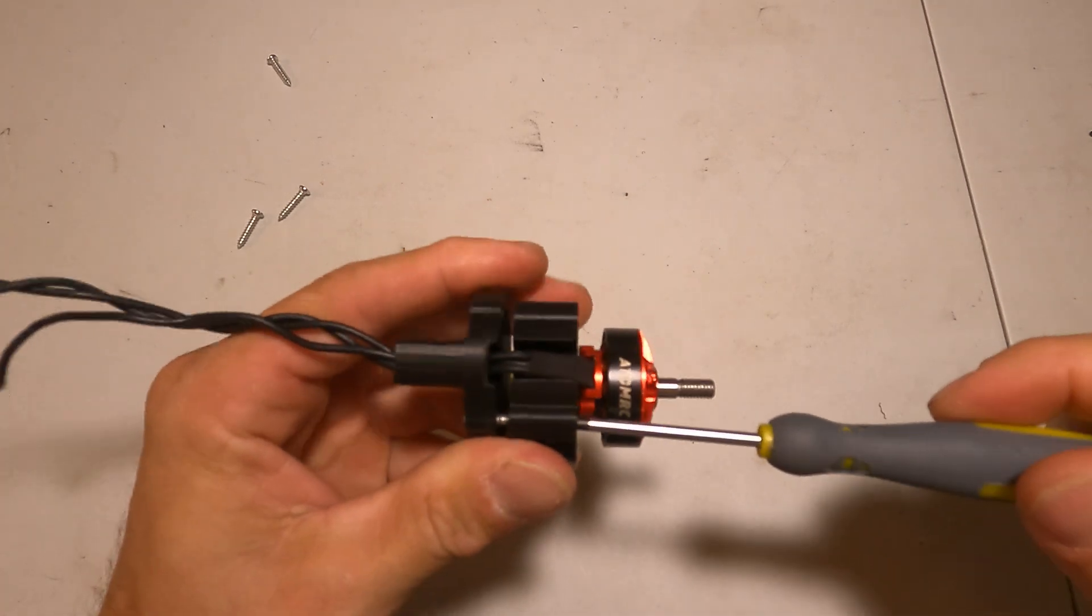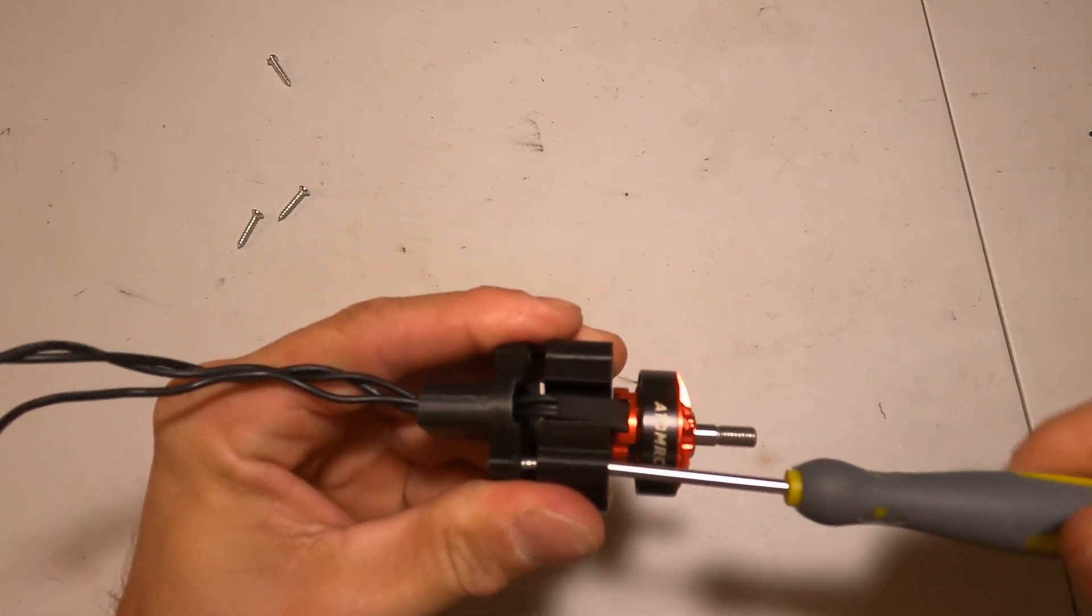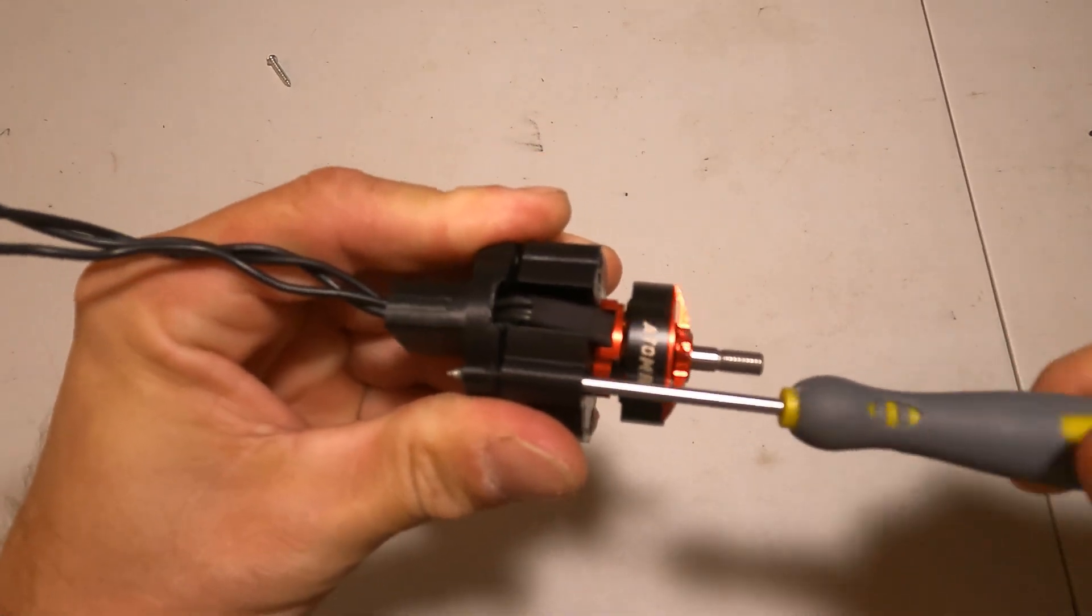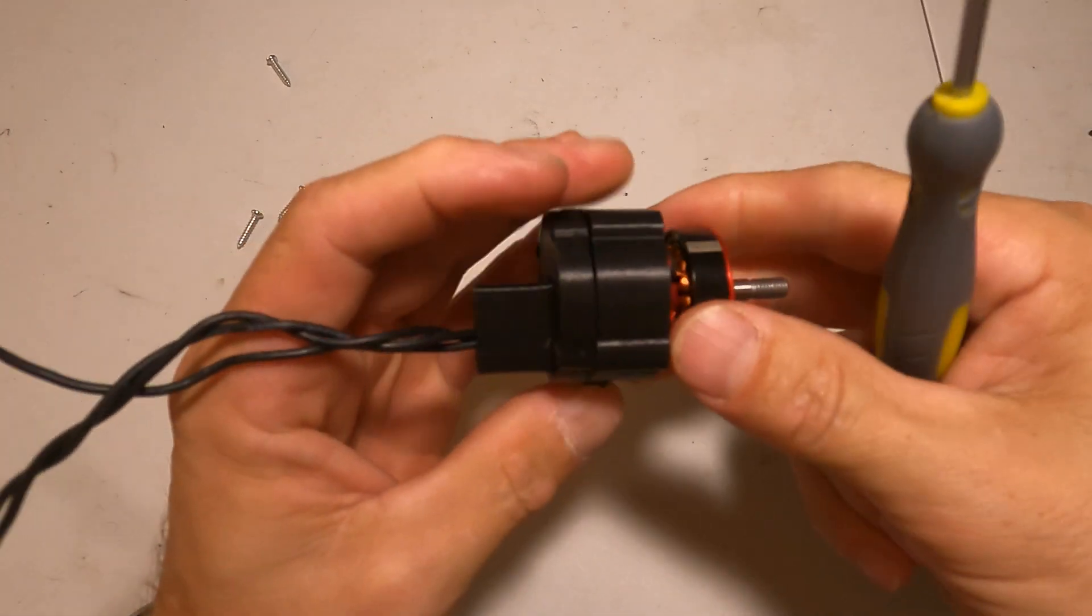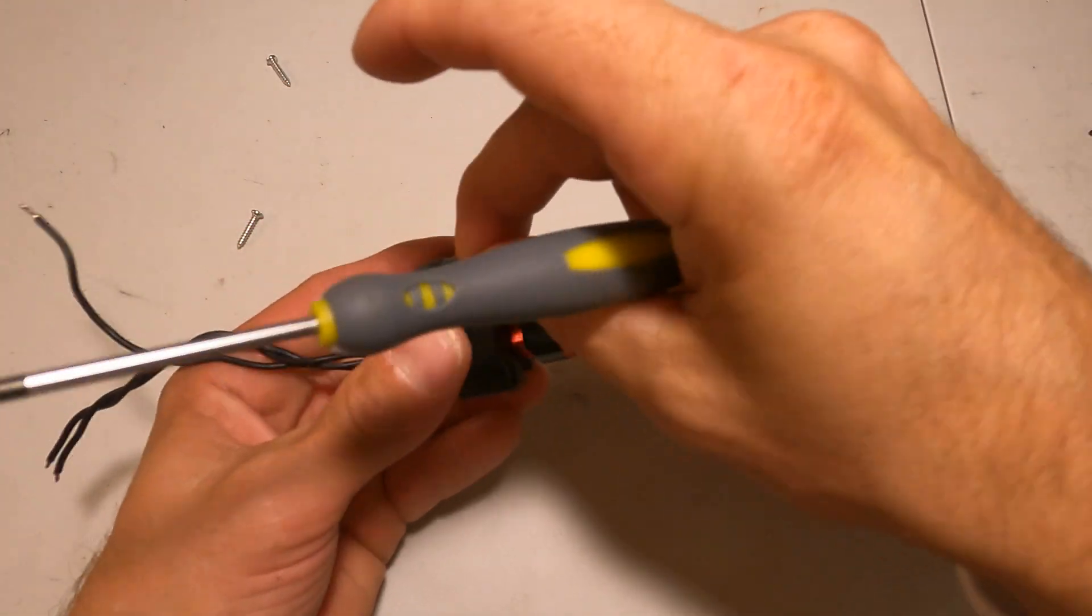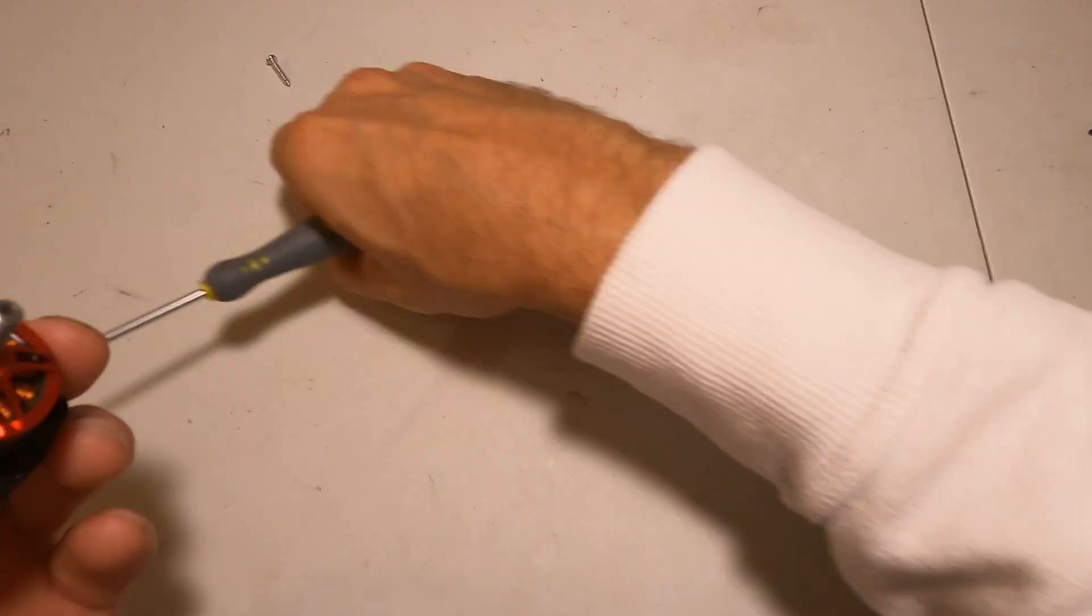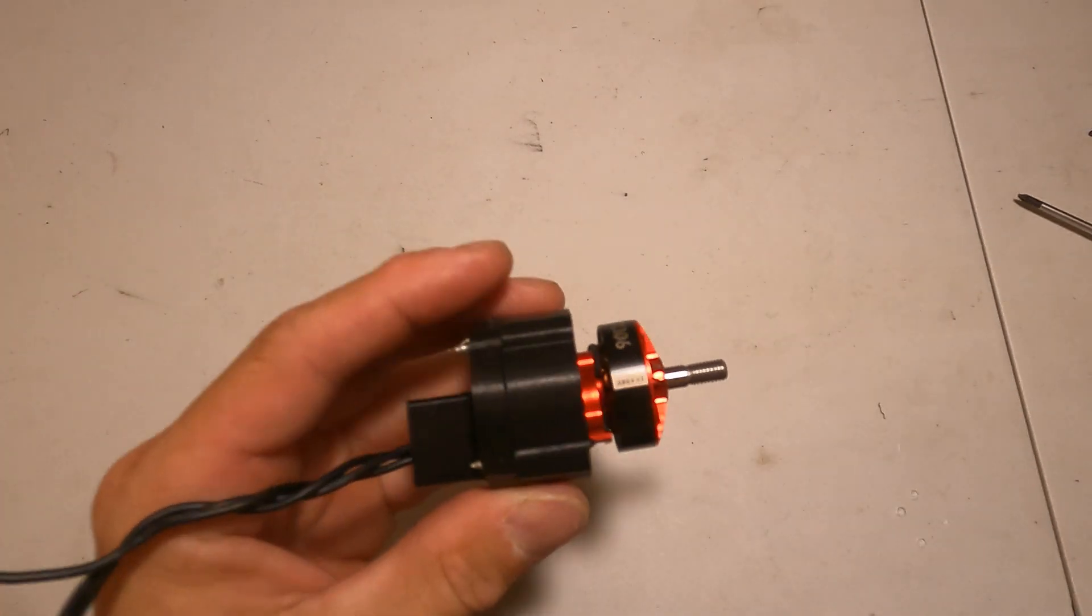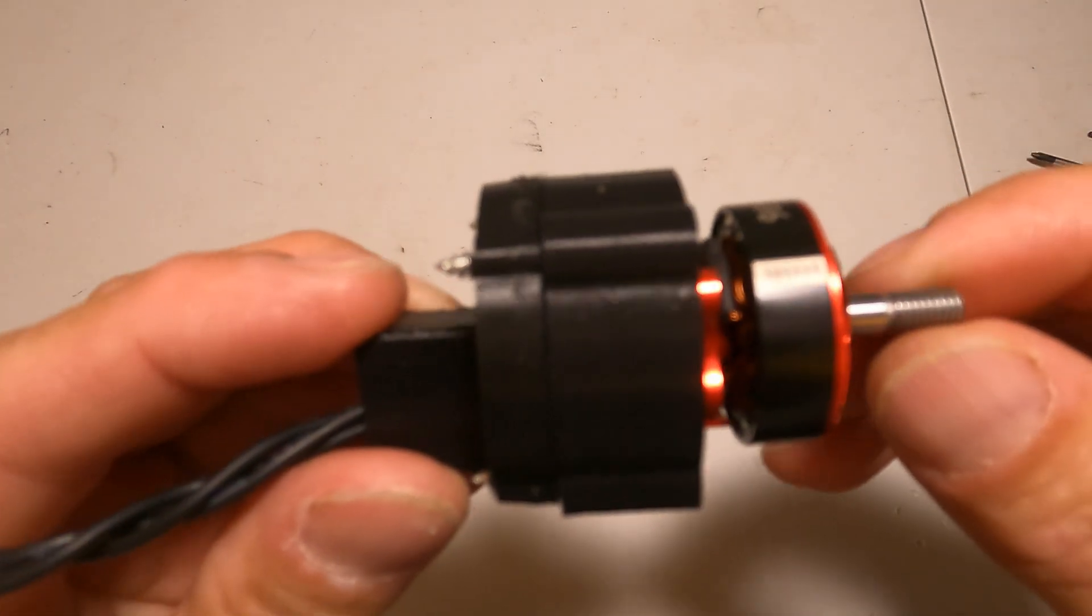These are a number four by five-eighths sheet metal screw, and then these just go through and these screw to the base. And that is it.